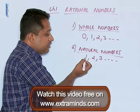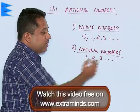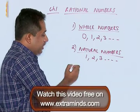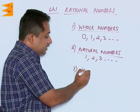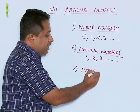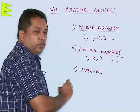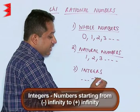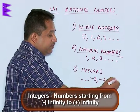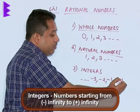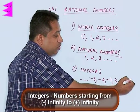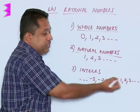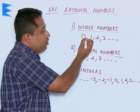Then we come to integers. Integers also include negative numbers, so you have from minus infinity to positive infinity. You have negative numbers, you have 0 in between, and followed by positive numbers. So this is the integers.